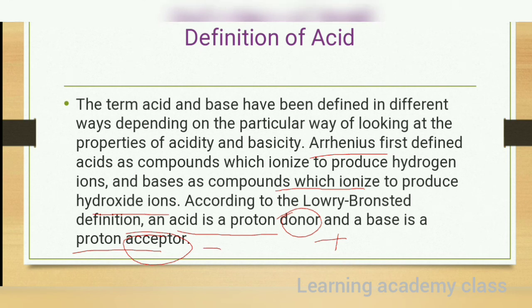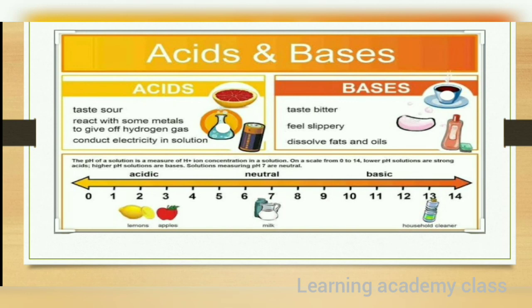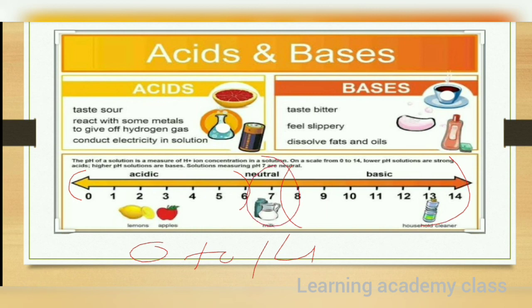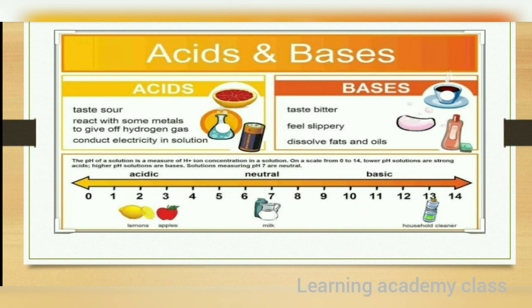Let's see a quick overview of the pH scale in relation to acid and base. The pH scale goes from 0 to 14. From 0 to 6 it has an acidic nature, 7 is neutral, and 7 to 14 has a basic nature. For example, milk is neutral, while lemon and apple are acidic in nature because they have a sour taste.